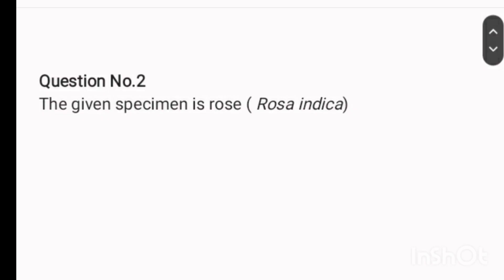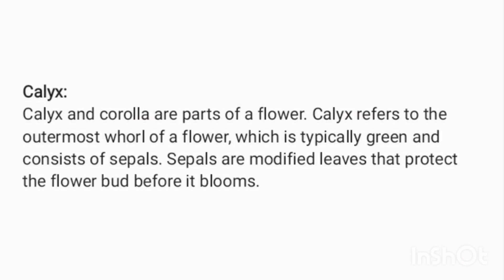Question number two: the given specimen is rose calyx. Calyx and corolla are parts of a flower. Calyx refers to the outermost whorl of a flower, which is typically green and consists of sepals. Sepals are modified leaves that protect the flower bud before it blooms.